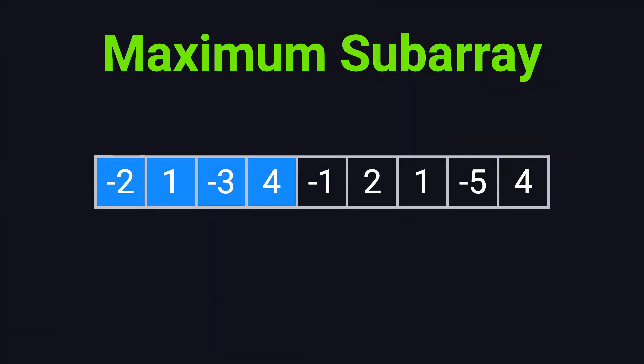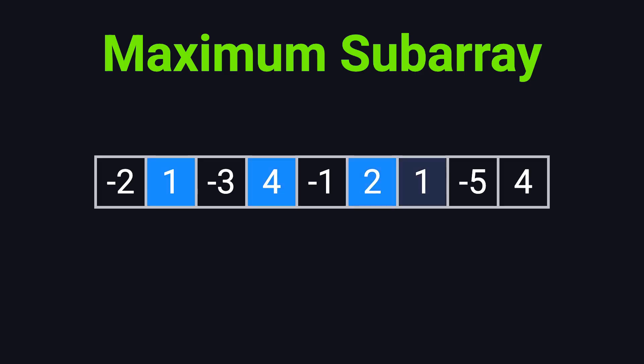For example, you could pick the first four numbers, -2, 1, -3, and 4. Their sum is 0, definitely not the largest. Or you could just pick a single number, like 4 — that still counts as a valid subarray. But what you can't do is skip around and pick only the positive numbers. Sure, that would give you a larger sum, but since they're not all next to each other, it breaks the rule of continuity.